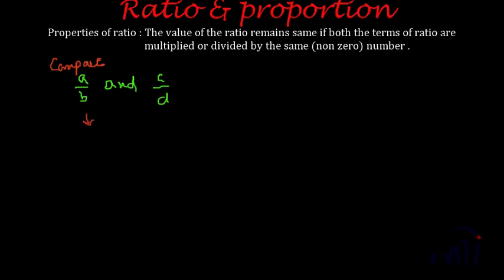Then what we have to do—one is a very simple way: convert both of them in the form of decimal. Divide a by b and you will get a decimal number, and divide c by d you will get another decimal number, and then the comparison becomes very easy. Another way of comparing two ratios is exactly same as comparing two fractions.